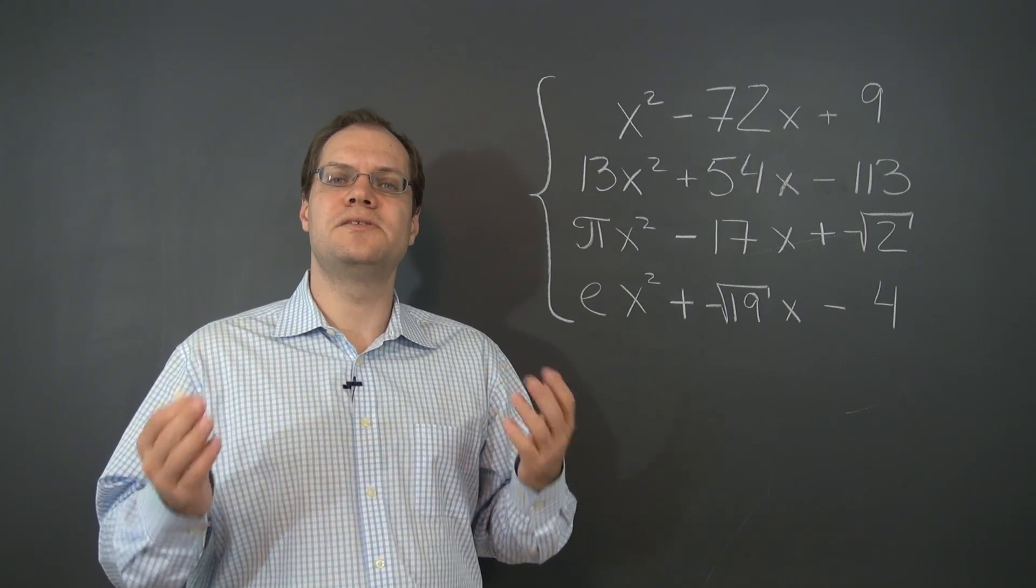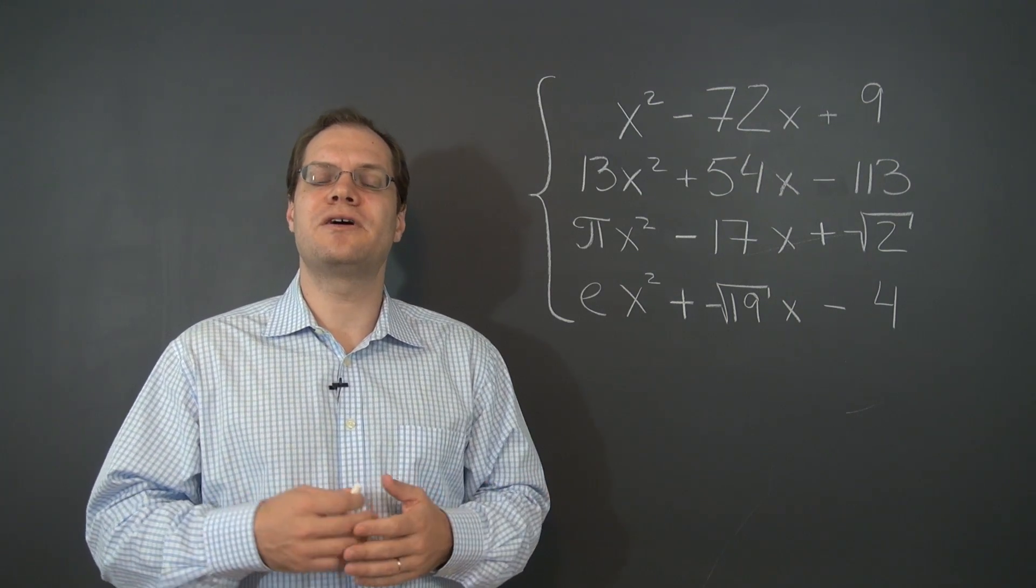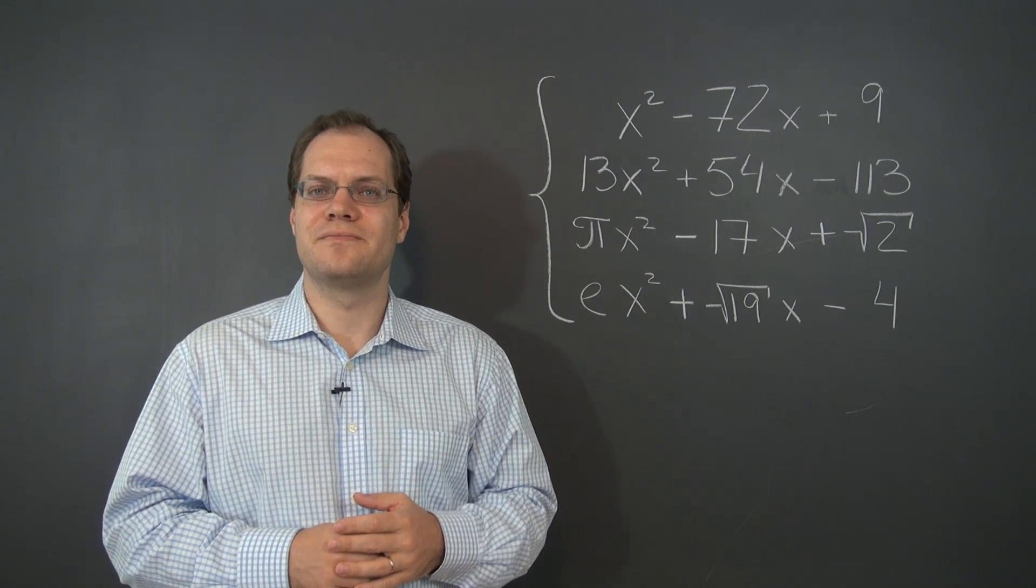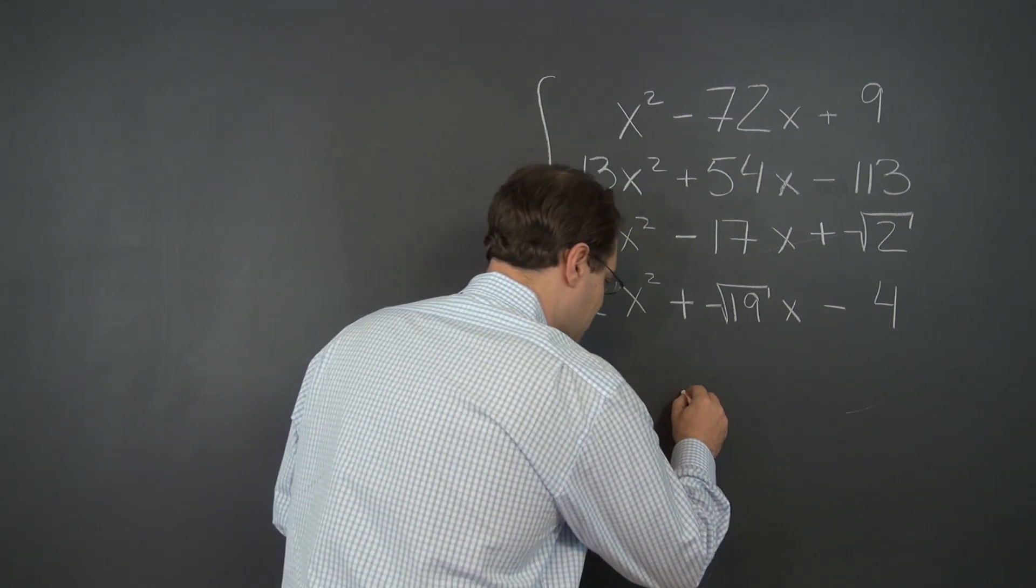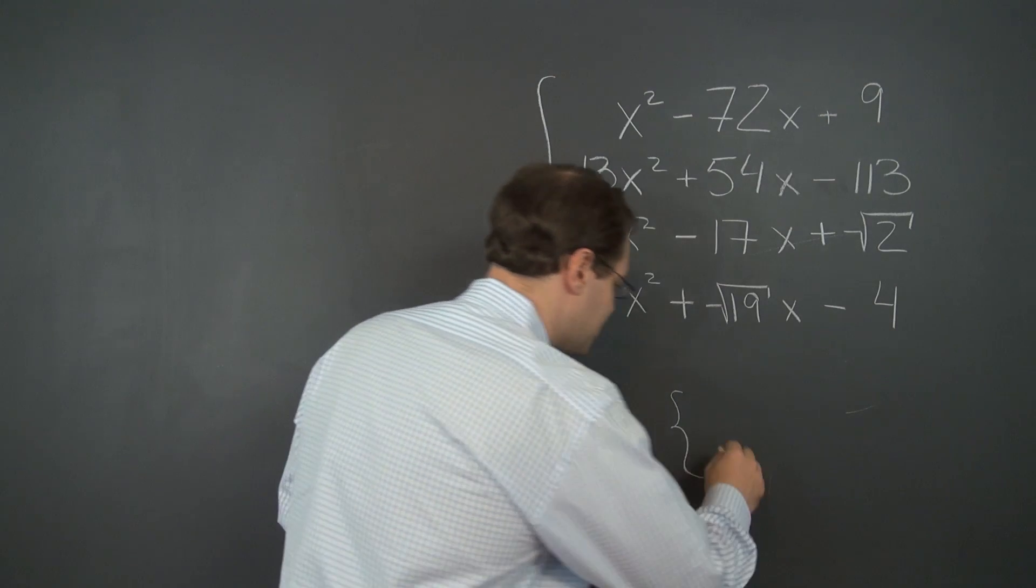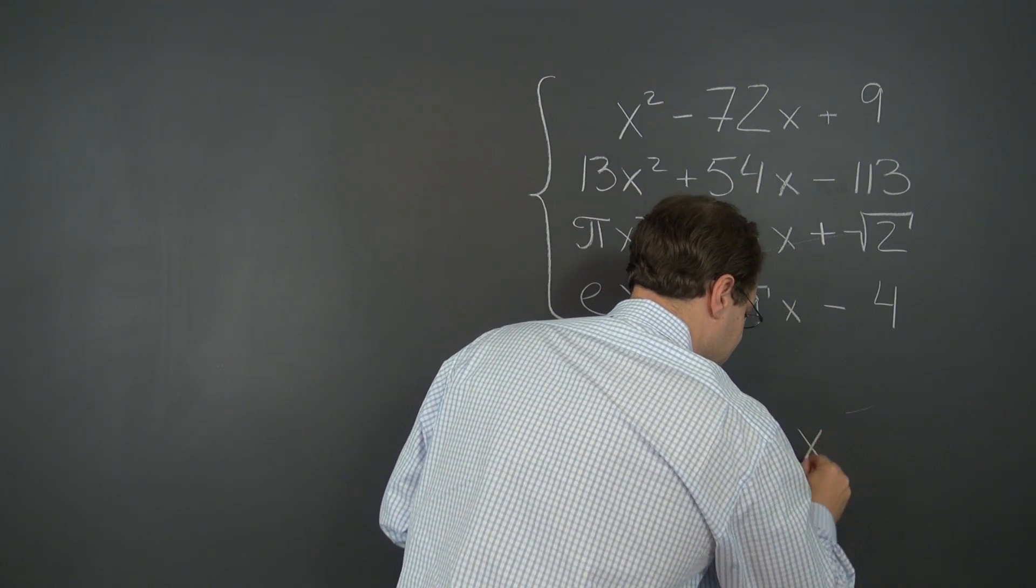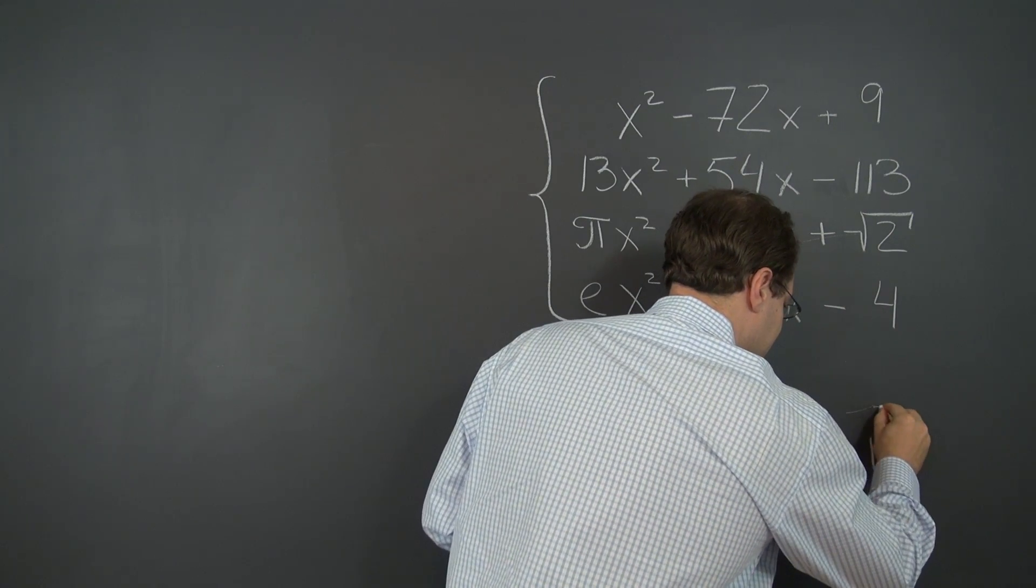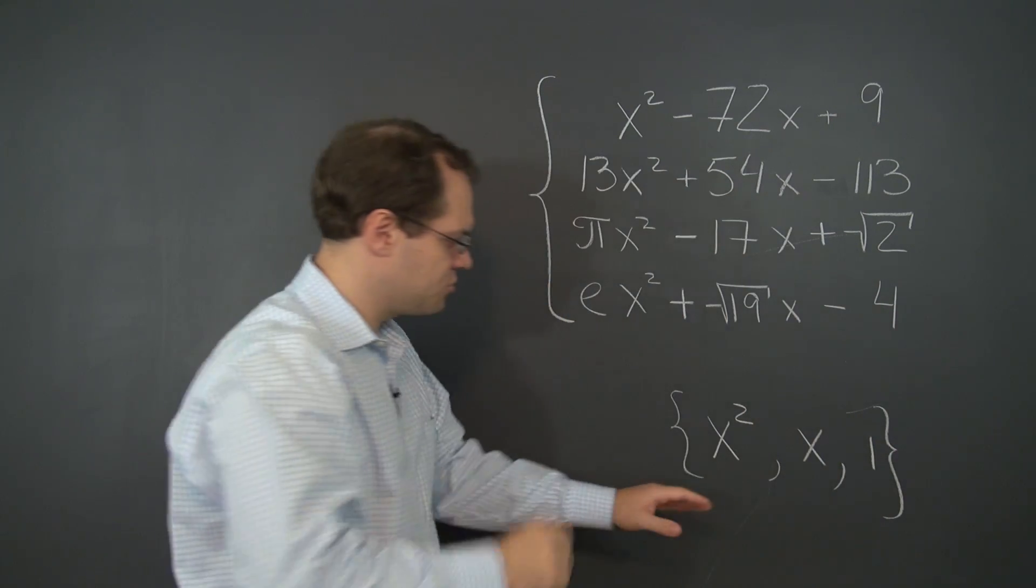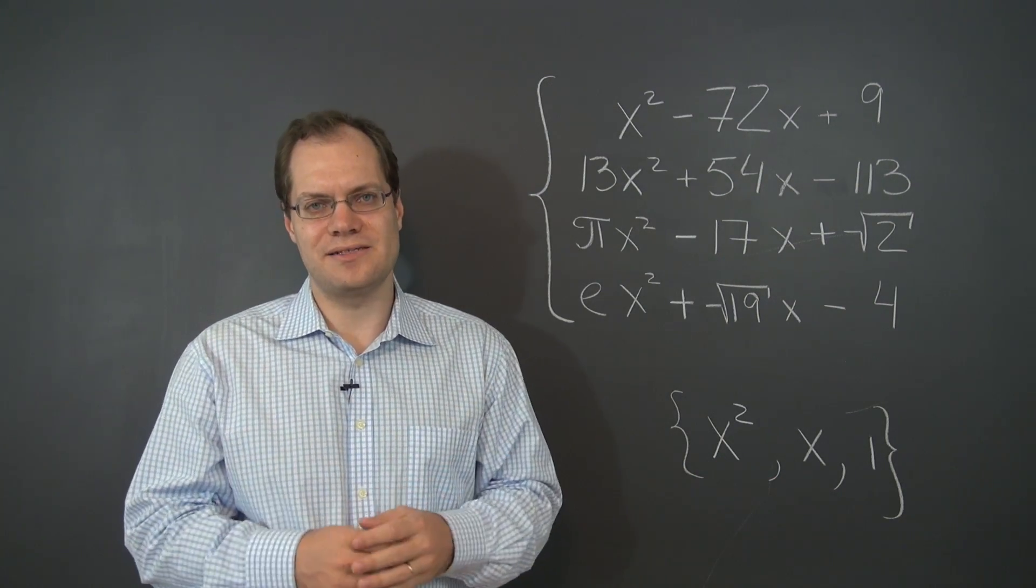Now, how do I know that the space of quadratic polynomials is three-dimensional? Well, that's because I can come up with a basis for it. Here's the basis. We always put sets of vectors in curly brackets. And the three elements in the basis are x squared, x, and 1. These are three quadratic polynomials. And this set can serve as a basis for the entire space.